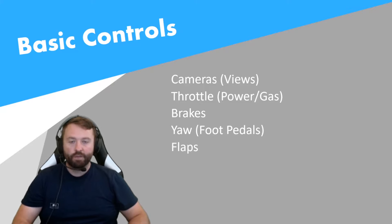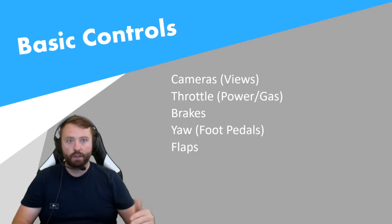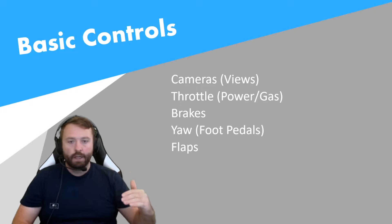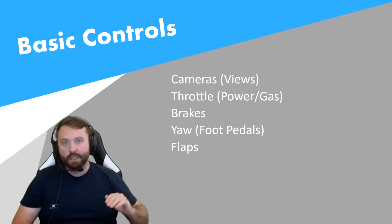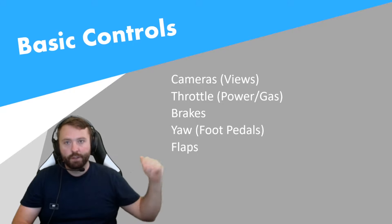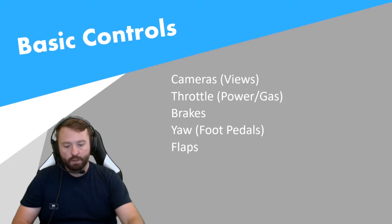Next is flaps. Flaps slow you down but also give you more lift so you float better. You use them on takeoff so you get off the runway faster, and you use them on landing so that you're floating, you slow down, and you land nice and soft.